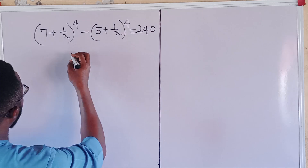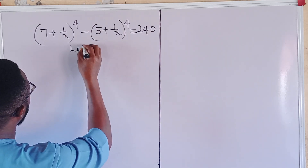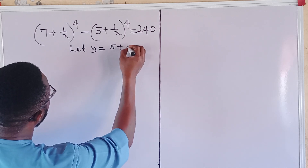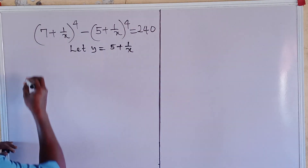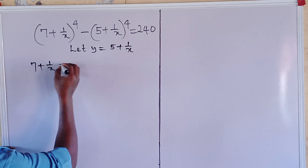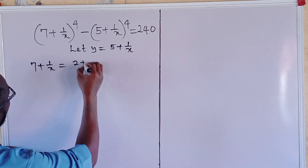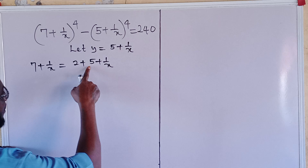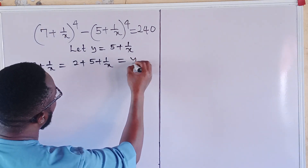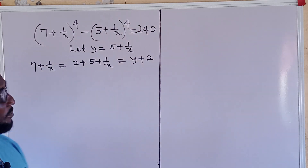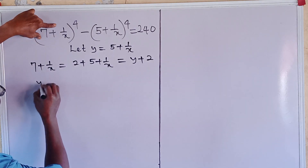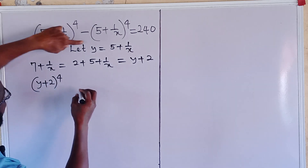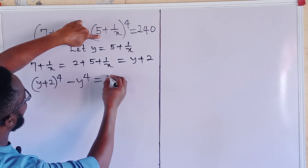We shall make a vital algebraic substitution. Let y equal to 5 plus 1 upon x. So if y is (5 + 1/x), then (7 + 1/x) would be 2 plus (5 + 1/x), which is y plus 2. Obeying the rules of algebra, this humongous equation can be rewritten in condensed form as: (y + 2)^4 minus y^4 equals 240.